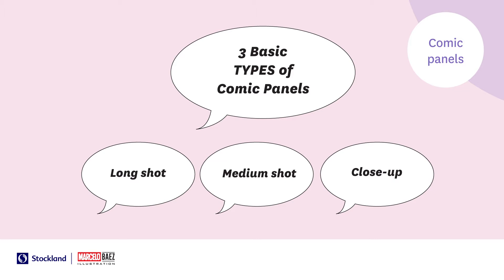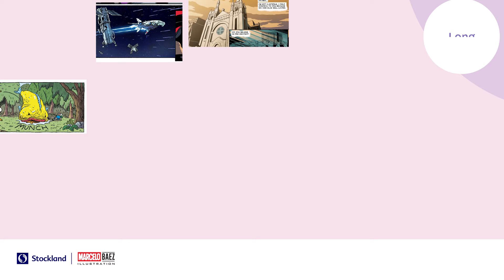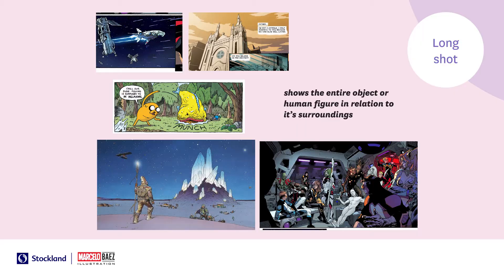Let's talk about the three basic panels that exist in all comic books and visual storytelling. The first one is long shot, the second one is medium shot, and the third one is close-up. The long shot is also called an establishing shot — it's a shot where you'll see an image of a background, a building, a house, or a landscape. Basically, it's establishing where your characters are going or where they are.